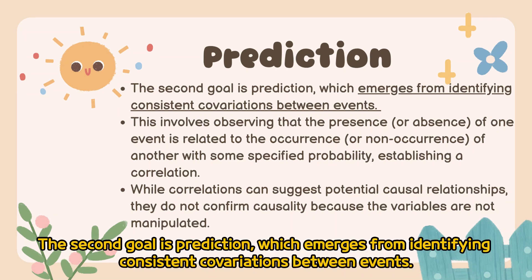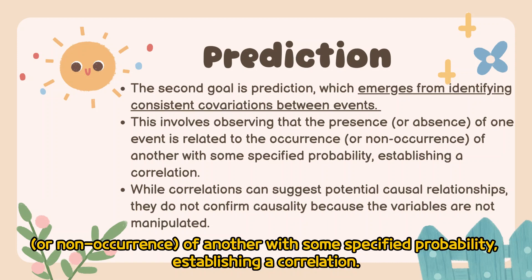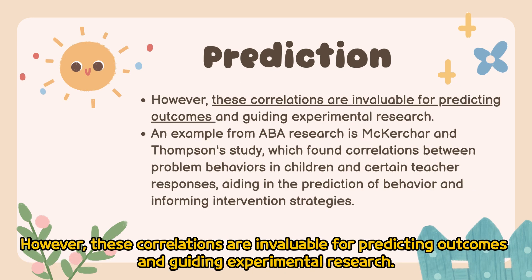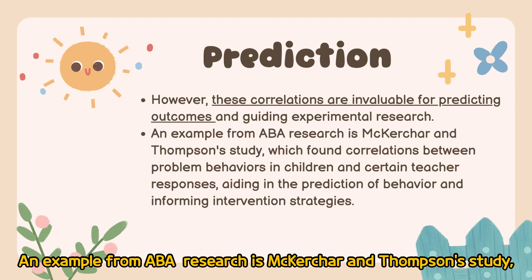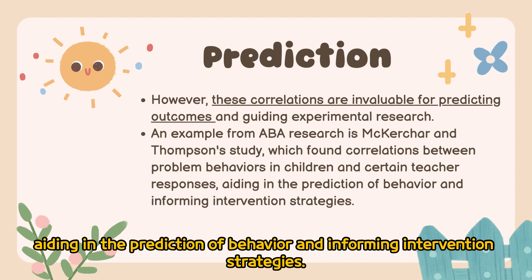Prediction: The second goal is prediction, which emerges from identifying consistent covariations between events. This involves observing that the presence or absence of one event is related to the occurrence or non-occurrence of another, with some specified probability establishing a correlation. While correlations can suggest potential causal relationships, they do not confirm causality because the variables are not manipulated. However, these correlations are invaluable for predicting outcomes and guiding experimental research. An example from ABA research is McIrcher and Thompson's study, which found correlations between problem behaviors in children and certain teacher responses, aiding in the prediction of behavior and informing intervention strategies.